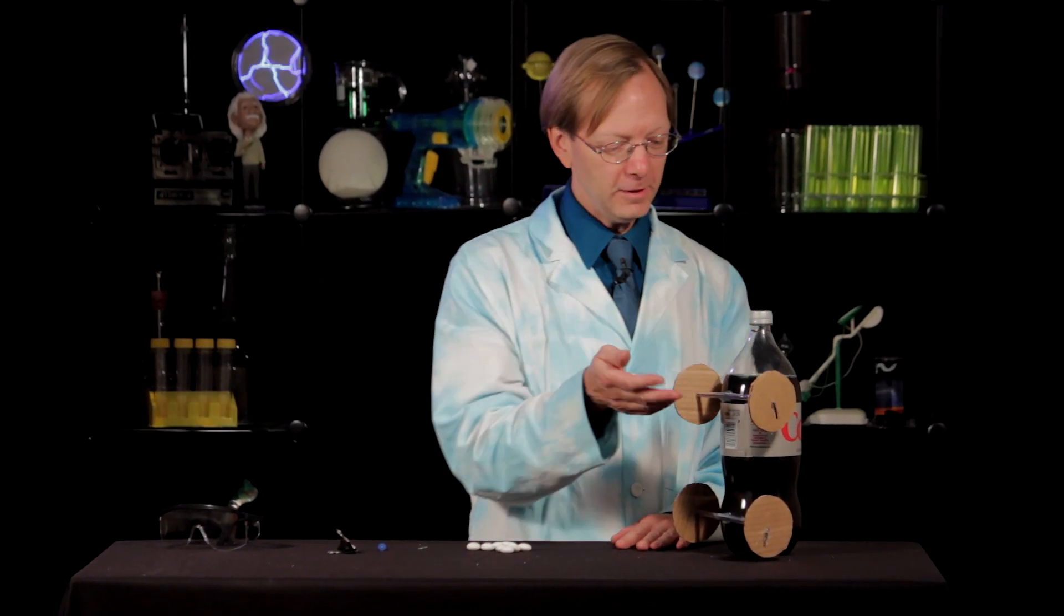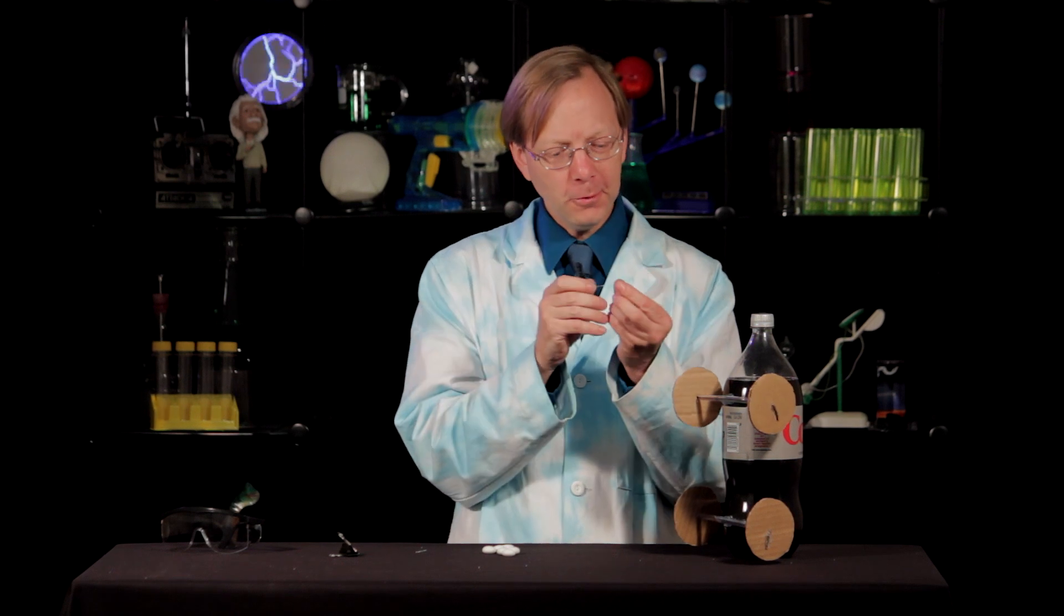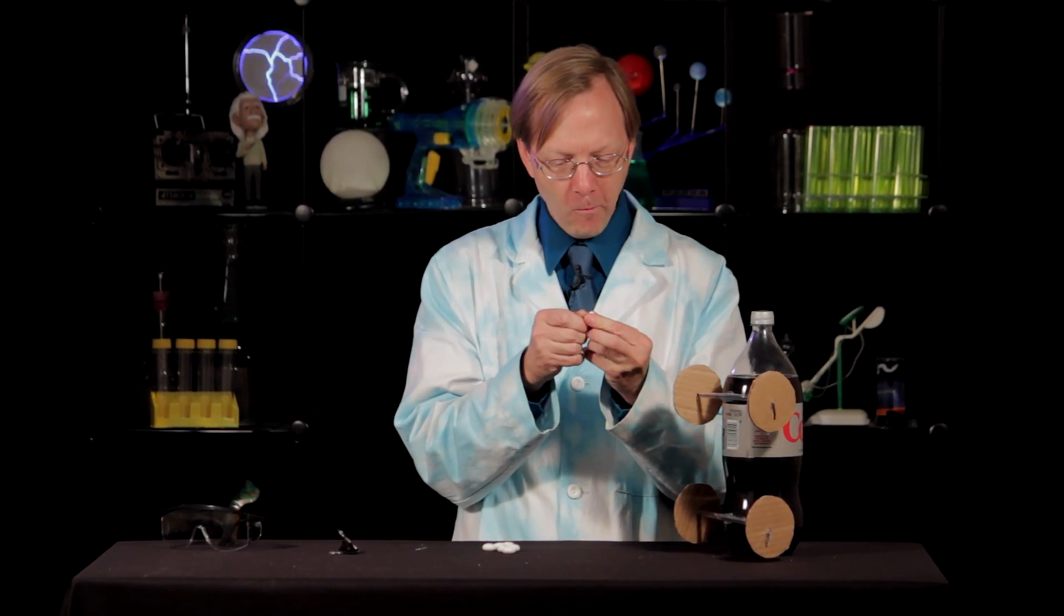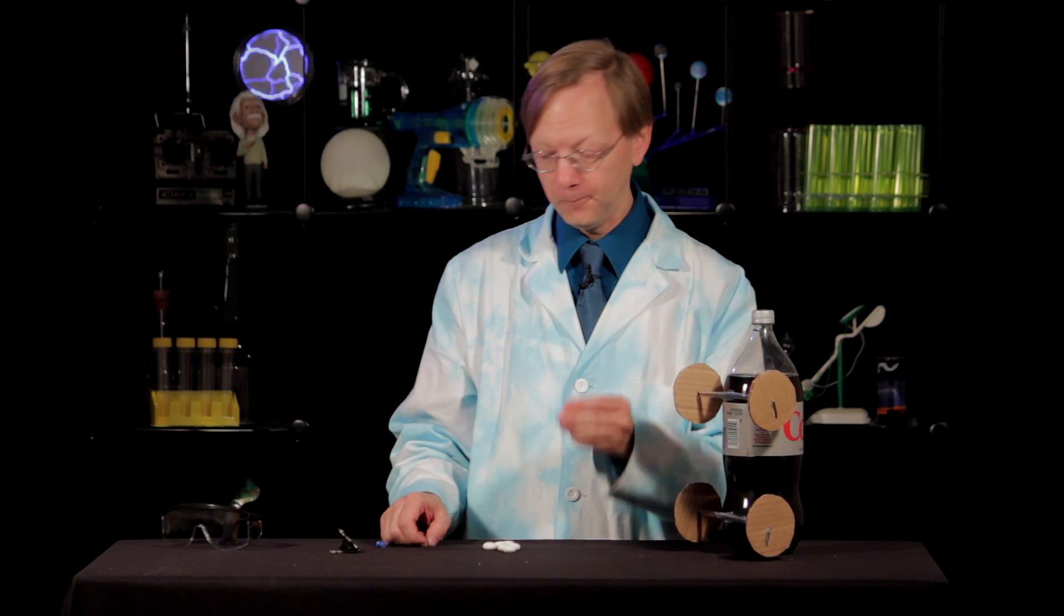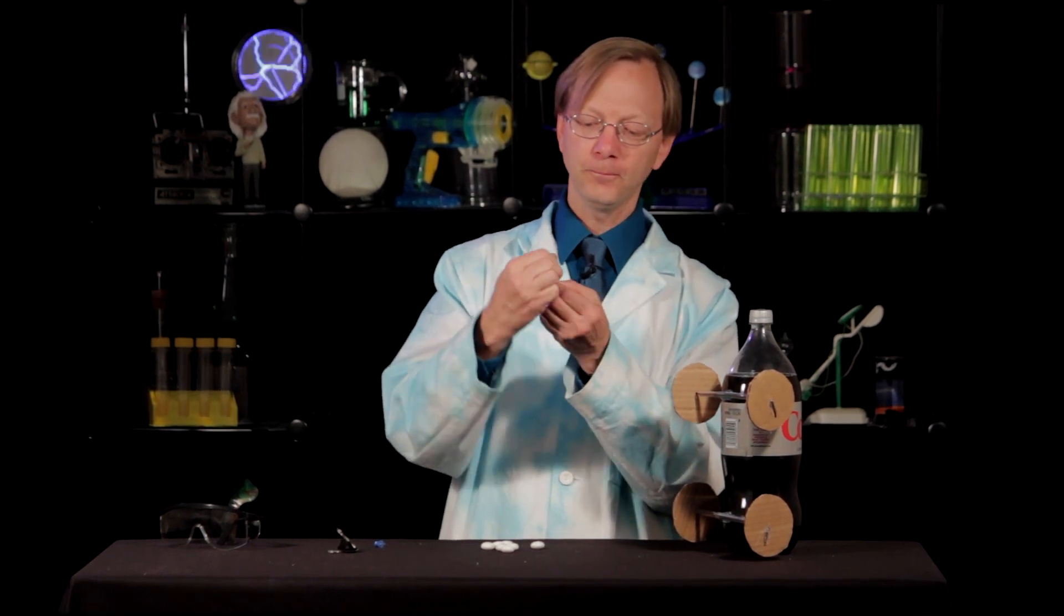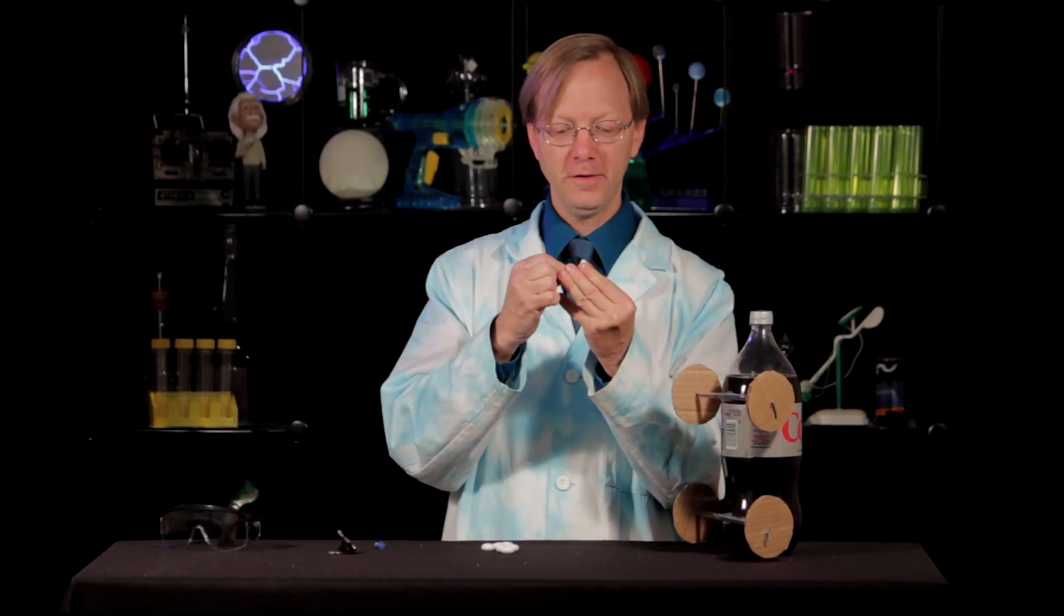With our Diet Coke Mentos vehicle all set, now we have to build the propulsion system. In this case, delicious Mentos candies. Here's what you need to do. Take a push pin and carefully poke a hole through the middle of five Mentos like that. Then unbend your paper clip like this and fish the Mentos through one at a time. When you're all done, they'll look like this. Bend that little part over so that when you turn them upside down they won't fall off. It's like a little Mentos shish kebab.